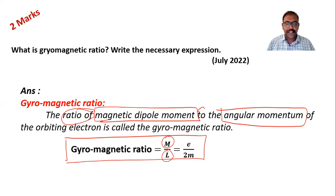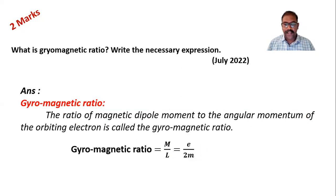And gyromagnetic ratio is given by this formula M by L equals E by 2M. E is the charge on electron, M is the mass of electron.